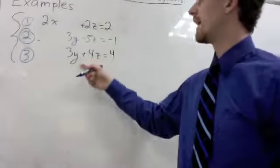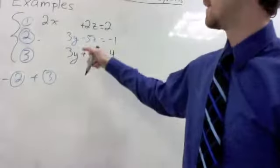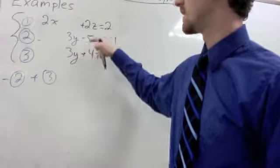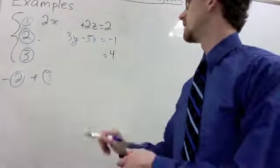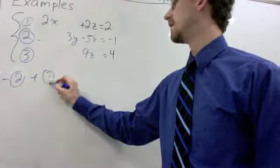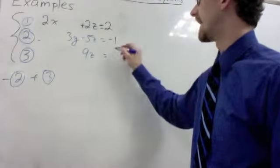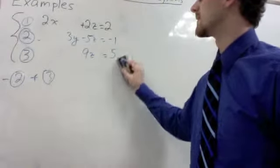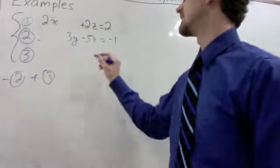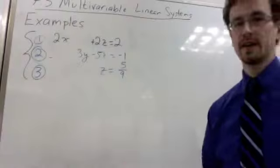And then we want to get rid of the y. Our third equation already doesn't have an x, which is good. We want to get rid of the y. So we add together negative equation 2 plus equation 3. Which gets us negative 3y plus 3y is 0. 5z plus 4z is 9z. And 1 plus 4 is 5. And then we solve our last equation dividing both sides by 9. Which gets us that z equals 5 ninths.